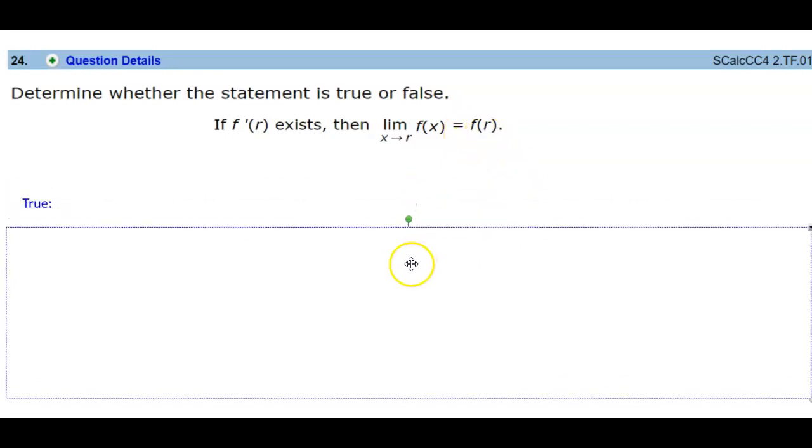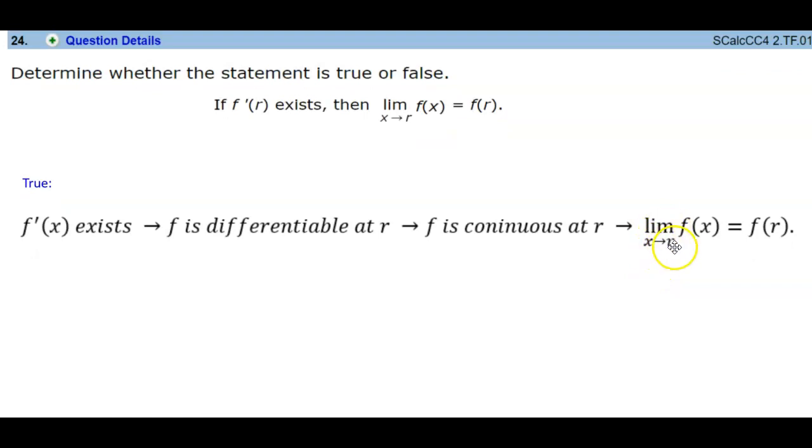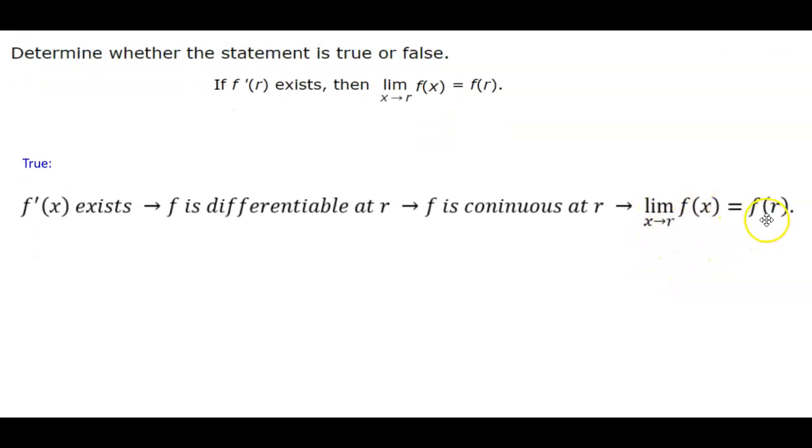Well, this statement is true, and that's because if the derivative exists, then that means f is differentiable at that value of r, and therefore f is continuous at r, which means the limit as x approaches r of that function is equal to f at r.